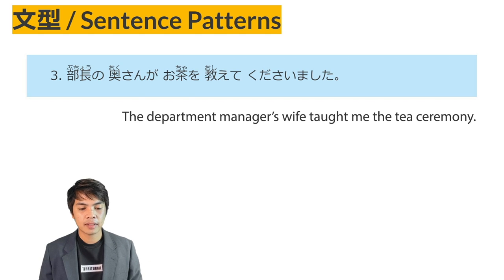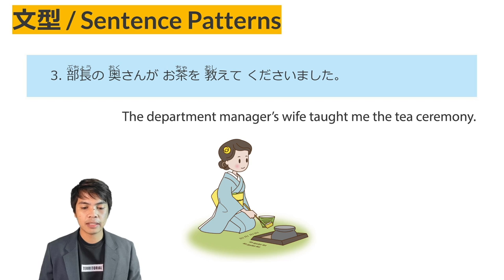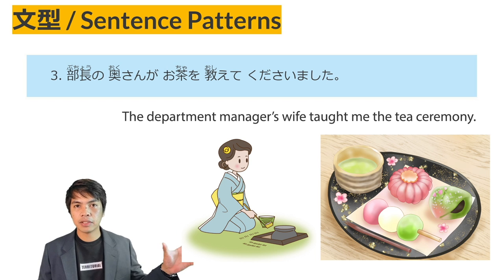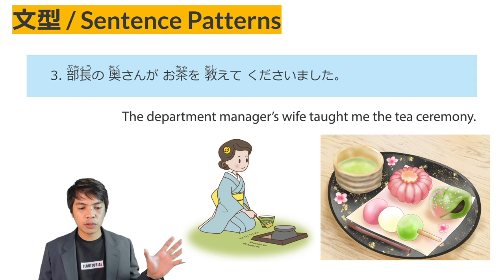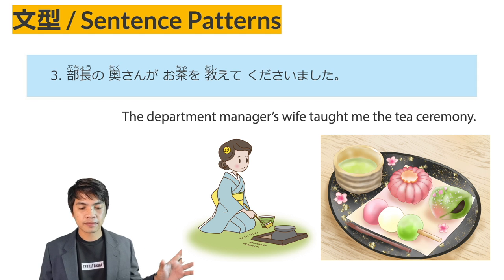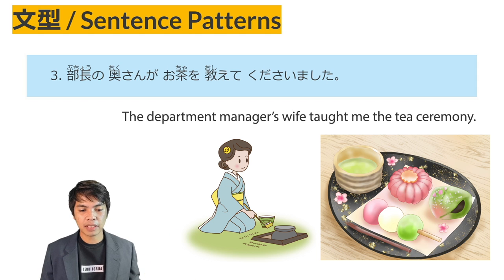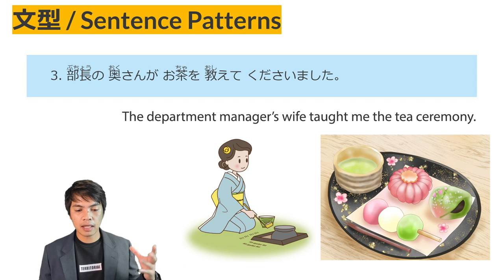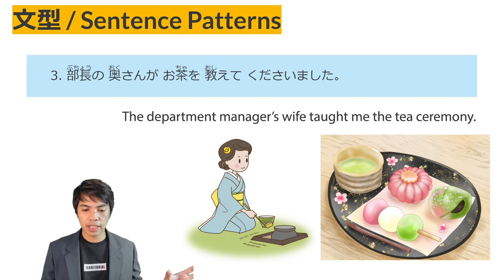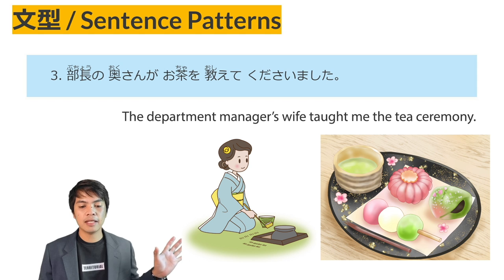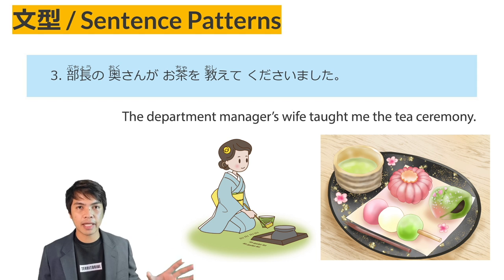Sentence Pattern No. 3: Butchou no okusan ga ocha wo oshiete kudasaimashita. The verb kudasaimashita is the polite form of kuremashita. In this sentence, butchou no okusan is the wife of the department manager, so you must be more polite. We use kudasaimashita instead of kuremashita — meaning the department manager's wife taught me the tea ceremony.